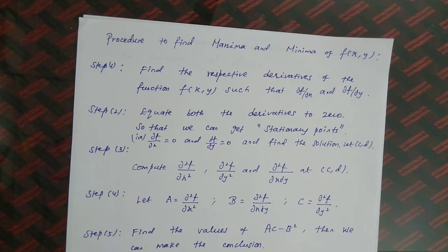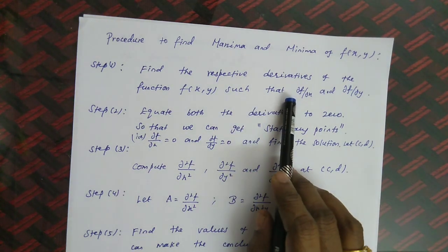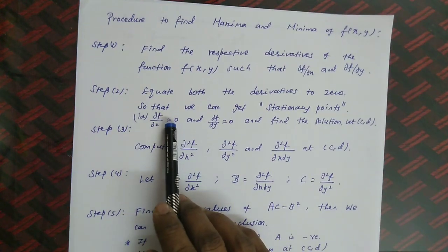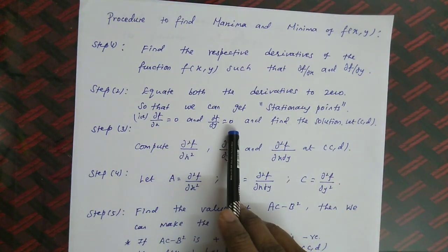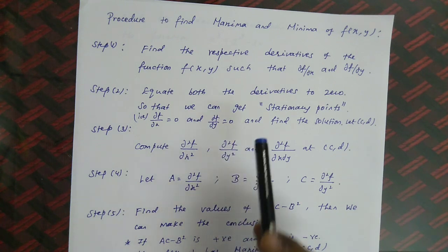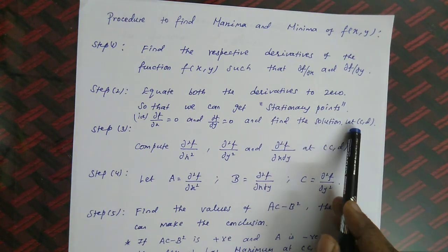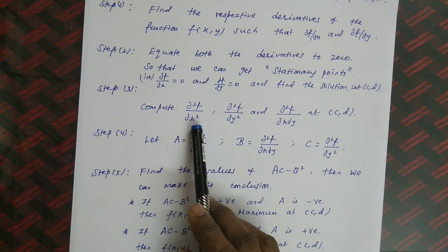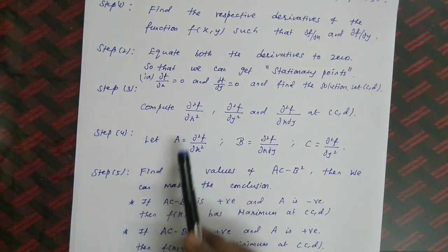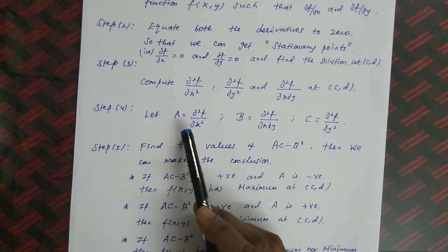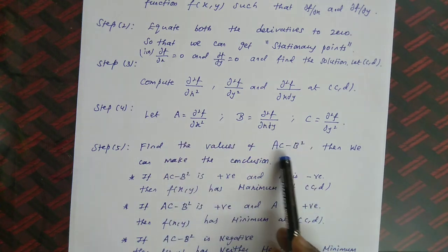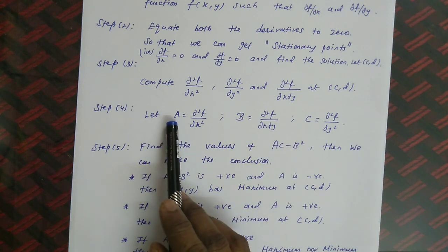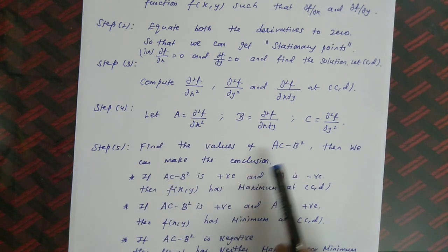In summary, Step 1 is to find the first-order partial derivatives with respect to x and y. Step 2 is to equate the partial derivatives to 0 to get stationary points — let the points be (c, d). Then in Step 3 we find the second derivatives, and in Step 4 we name them A, B, C. Finally we find the value of AC − B² and capital A at the stationary points to draw the conclusion.